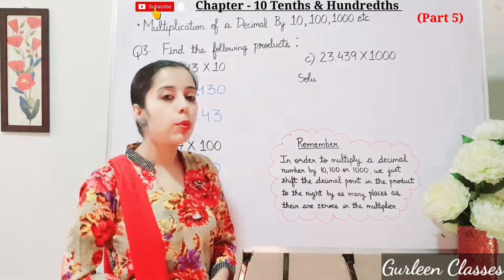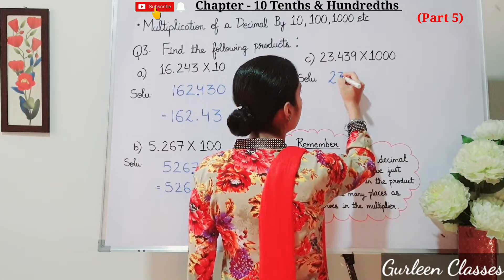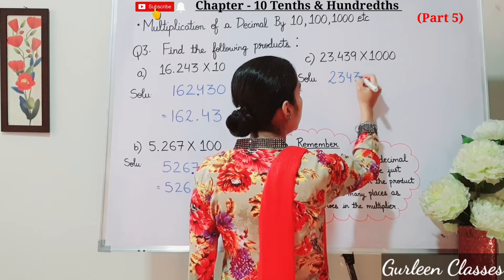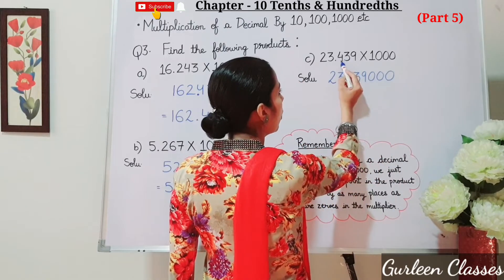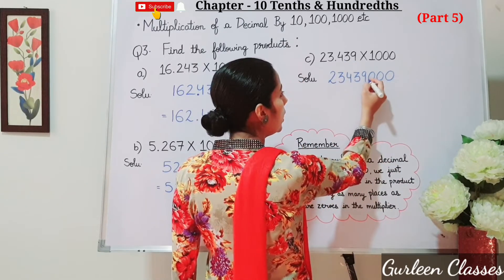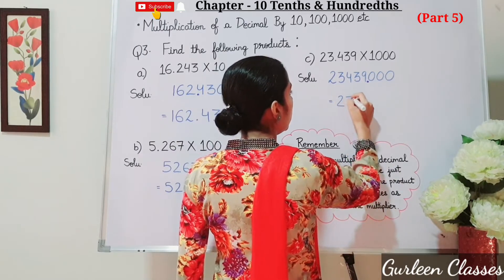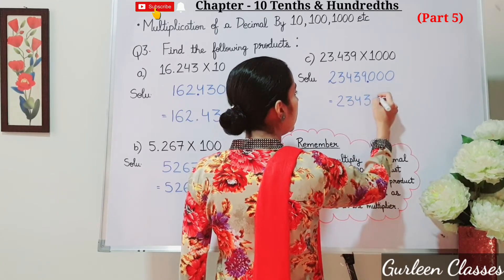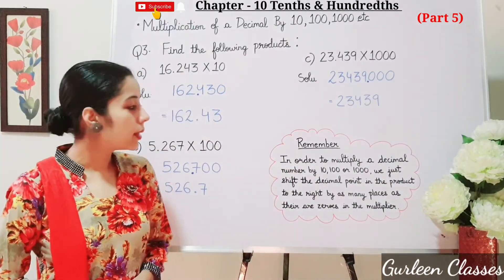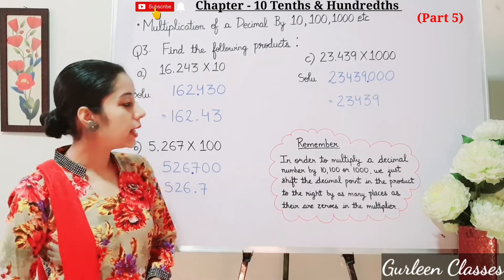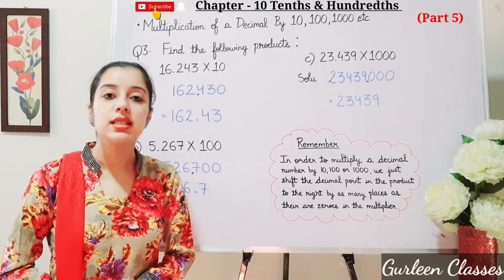Now part c: 23.439 into 1000. So let us multiply by removing the decimal point. After the decimal point there are 3 digits, so: 1, 2, 3 — the decimal point will come here. So let us remember: in order to multiply a decimal number by 10, 100, or 1000, we just shift the decimal point in the product to the right by as many places as there are zeros.